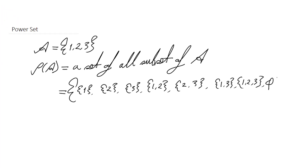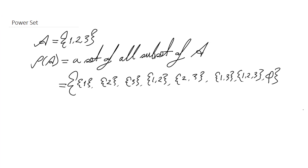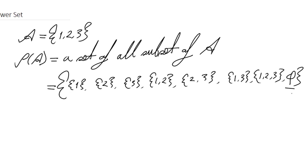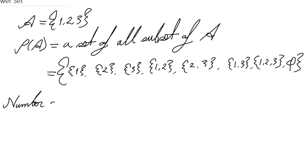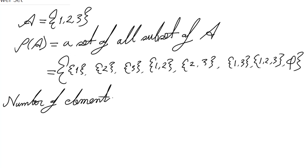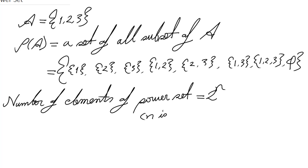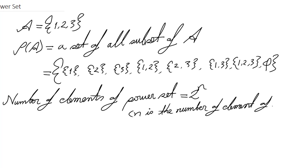And also the empty set. We have already learned that the empty set is an element of every set, which is why we must include the empty set in power sets. The number of elements in a power set is calculated using 2 to the power n, where n is the number of elements of the set.